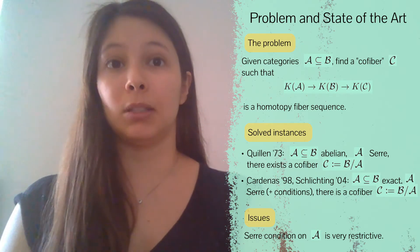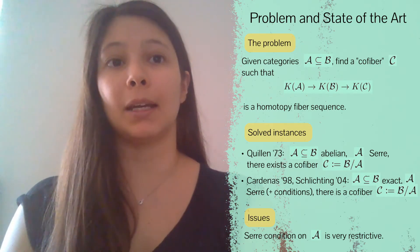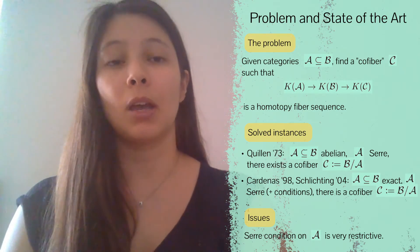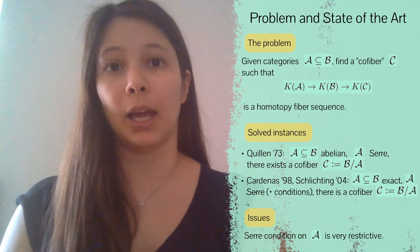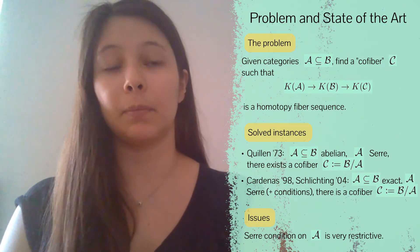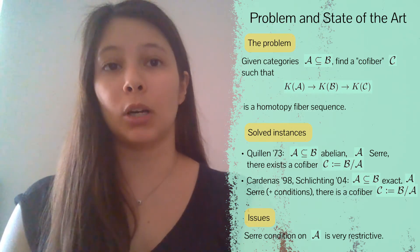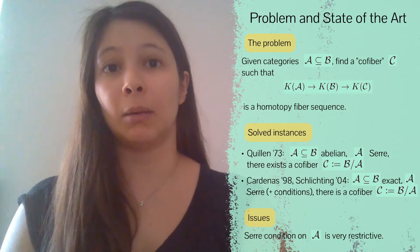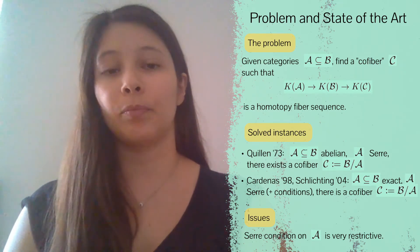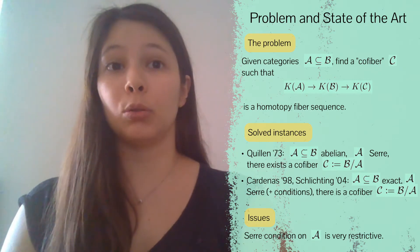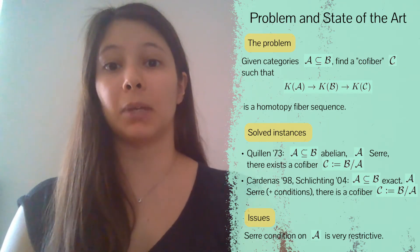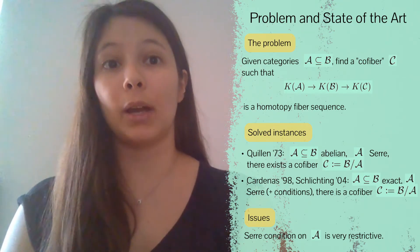This problem has been studied before. Quillen showed that if both A and B are abelian and A is a Serre subcategory, then one can construct a quotient category which is also abelian and fits into the spot of the co-fiber. Similarly, everything works if we replace the word abelian by exact and add a few technical conditions. The issue is that in practice the Serre condition on the subcategory A turns out to be quite restrictive.